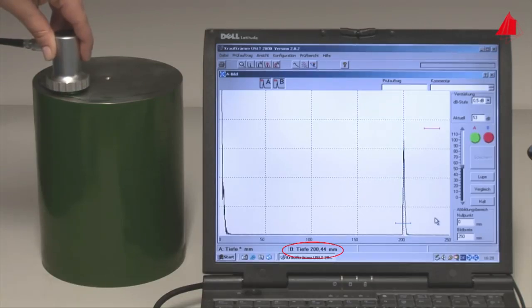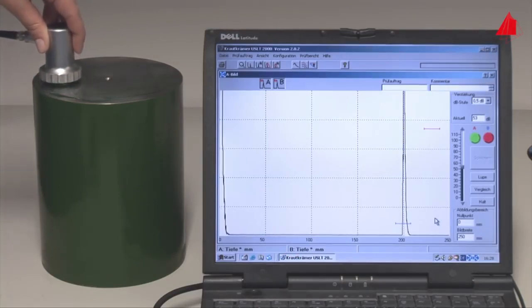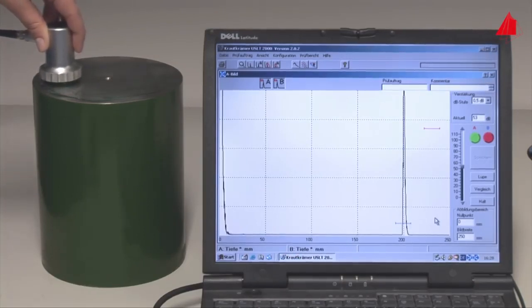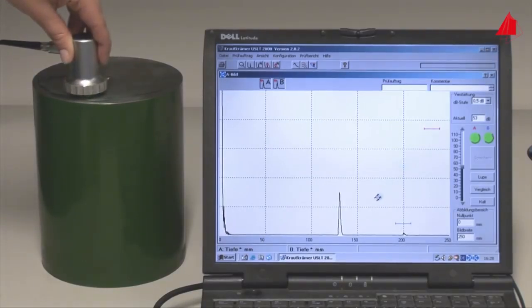And here we go. The material tester scans the upper front end of the cylinder with a probe and observes the monitor. A defect echo appears on the monitor. This defect is located in a depth of 130 millimeters below the surface.